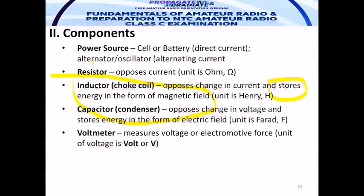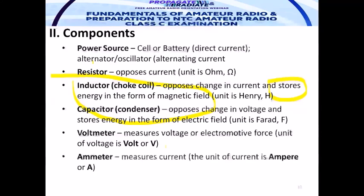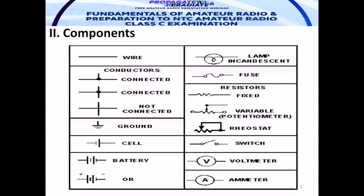The voltmeter measures voltage or electromotive force — its unit is the volt, and it is popularly known as a tester. However, a multimeter consists not only of a voltmeter but also an ohmmeter and an ammeter. The ammeter measures current in amperes. Voltmeter measures voltage; ammeter measures amperes or current.